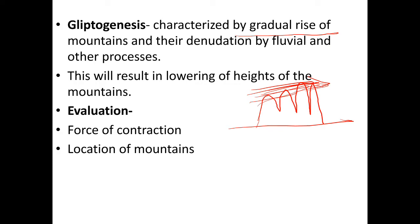Evaluating Kober's theory: some scholars argue that the forces of contraction are not sufficient to cause mountain building, as they cannot account for the great heights of mountains like the Himalayas. Also, Kober's theory can easily explain the west-to-east extension of mountains, but the north-to-south extension of mountain ranges cannot be explained with this theory.